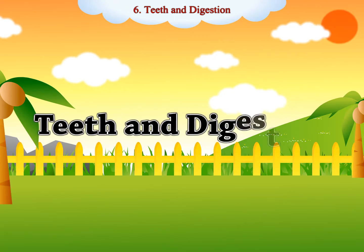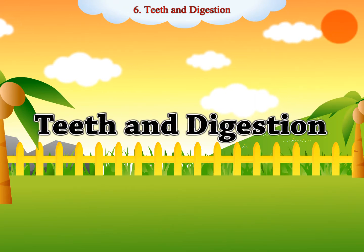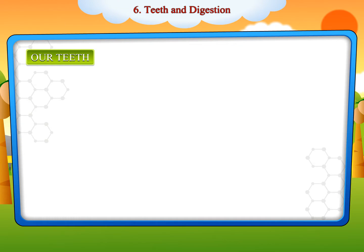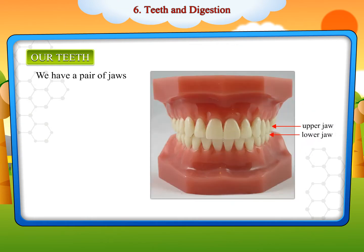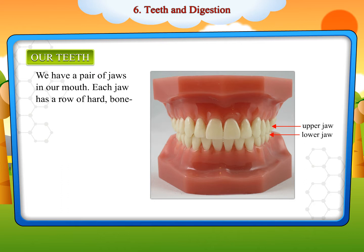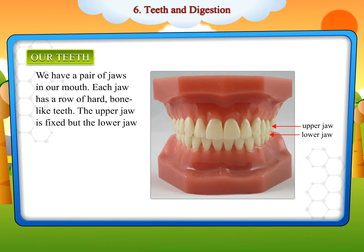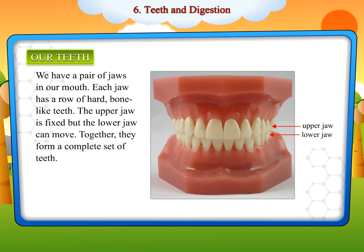Chapter 6: Teeth and Digestion. We have a pair of jaws in our mouth. Each jaw has a row of hard, bone-like teeth. The upper jaw is fixed, but the lower jaw can move. Together they form a complete set of teeth.